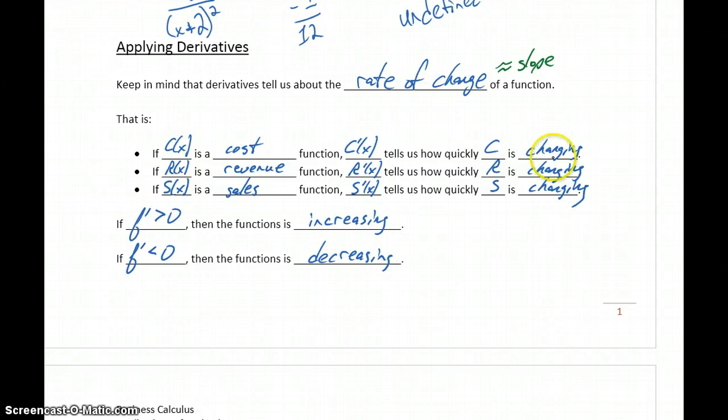That gives us information to understand that our costs are increasing or decreasing, revenue is increasing or decreasing, based off the result that we get from evaluating the derivative at a specific point.